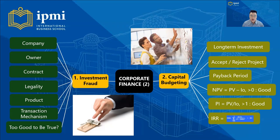Number five is assignments and examination review, covering individual assignments, group assignments, and final examination. Let's get into part two of the mind mapping, which talks about investment fraud and capital budgeting. In investment fraud, we should do our own research on the company, the owner, the contract, the legality, and the product.